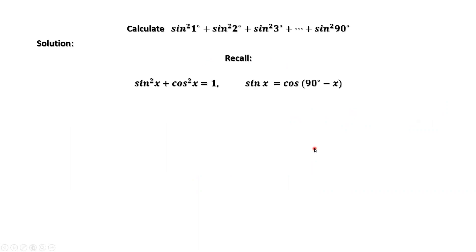Here are two important formulas we will use to solve this question. The first one is sine squared of x plus cosine squared of x equals one. The second one is sine of x equals cosine of 90 degrees minus x — the formula to convert sine into cosine.